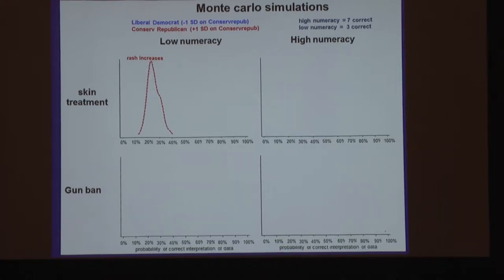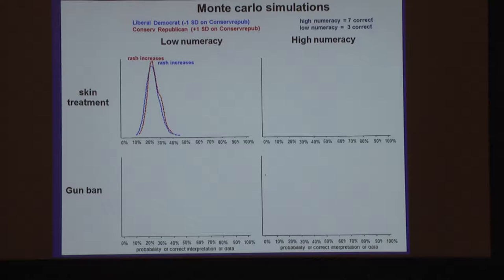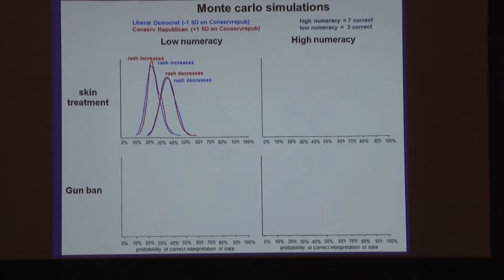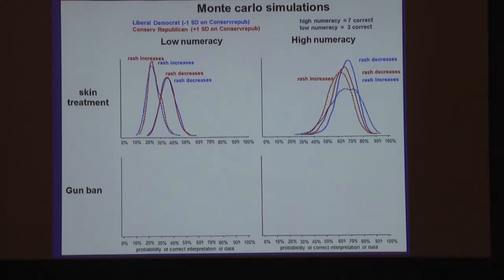So you can put it in these terms: a low-numeracy Republican has about a 25% chance of getting it right, plus or minus 10. Same thing for a low-numeracy person with liberal outlooks — they're a little more likely to get it right if the information suggested the rash would decrease, maybe a little confirmation bias, but it's not very big. If you look at high-numeracy subjects in the skin treatment condition, they're all doing about the same — much better, about 70% likely to get it right.